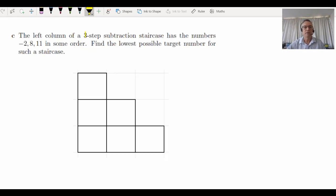Now in part C, we work with a smaller staircase. This one's only three step. But the problem is different. We actually have three numbers now to work with: negative two, eight and 11. So we can put them anywhere we want. We're going to keep going and get a target number. But here's our challenge. We want to find the lowest possible target number. As I'm sure you've worked out by now, if we put these in different orders, we'll get different target numbers. You need to find the lowest target number.